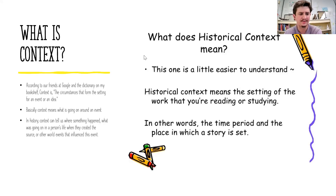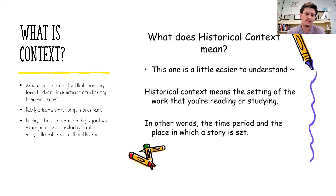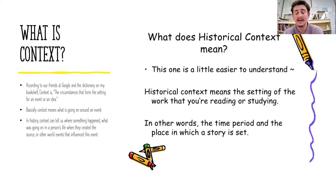According to Google and my dictionary, context is simply the circumstances that form the setting for an event or an idea — basically, what's happening around us. In history, context can be what is happening at the point in time when someone wrote their book, when someone wrote their newspaper article, or when they made their video. What was happening around them? What was the context of their work?